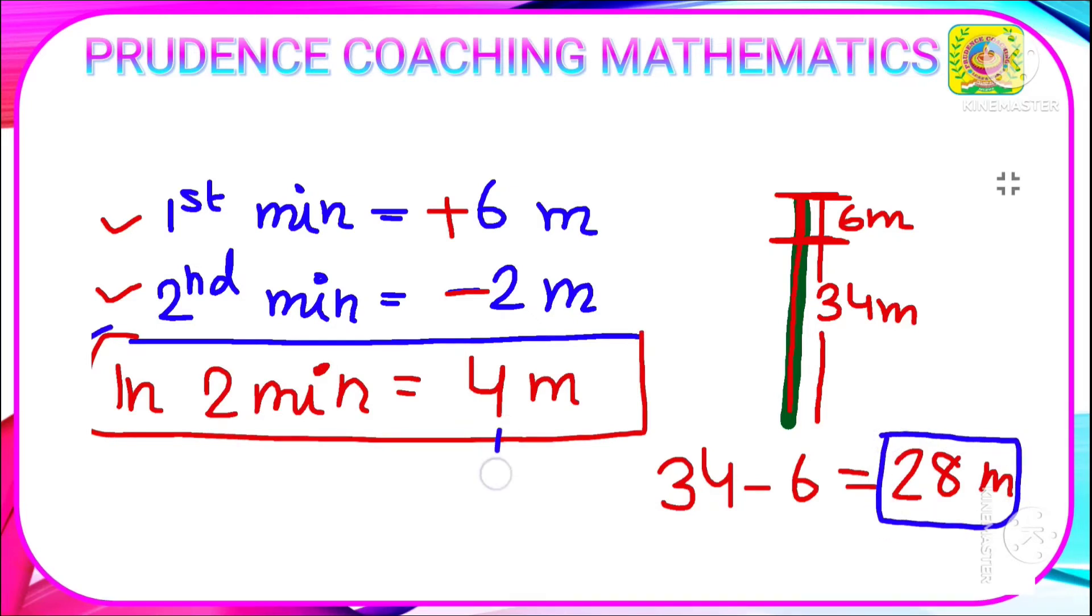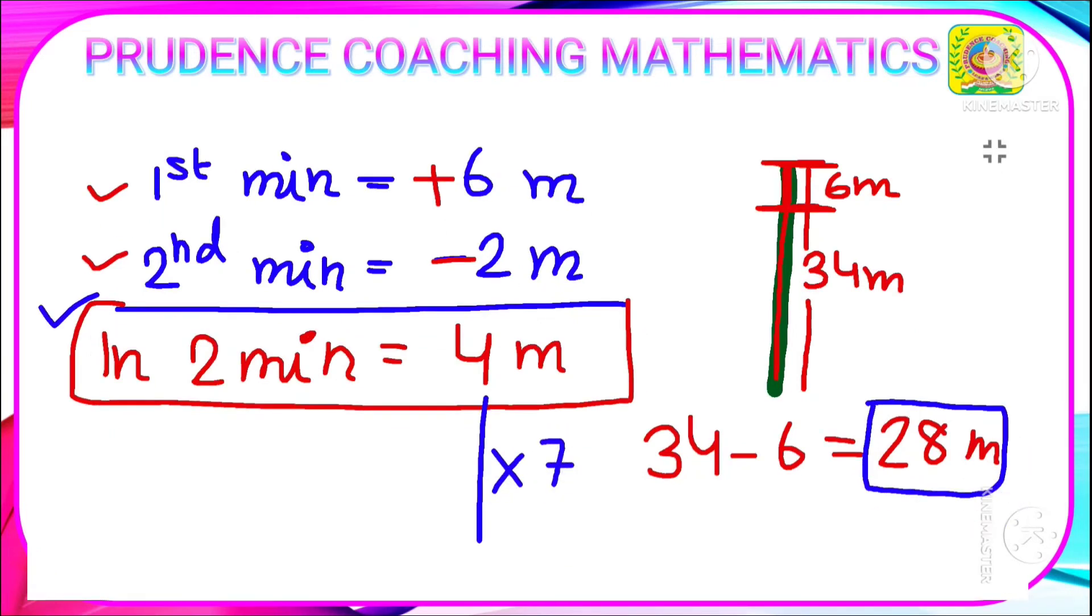So here we need to find 28 meters. 4 times 7 is 28 meters. So here also, we need to multiply with the time, that is 7.